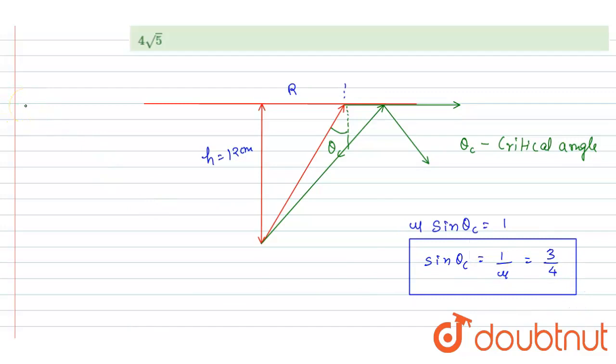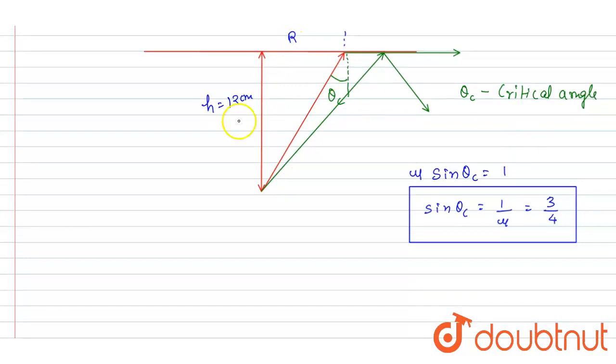Now if you see here, we wanted this r, so I will write if this angle is theta c, this will also be theta c. So if you see here, I will write this r by h is equals to tan theta, so it will be h tan theta c.